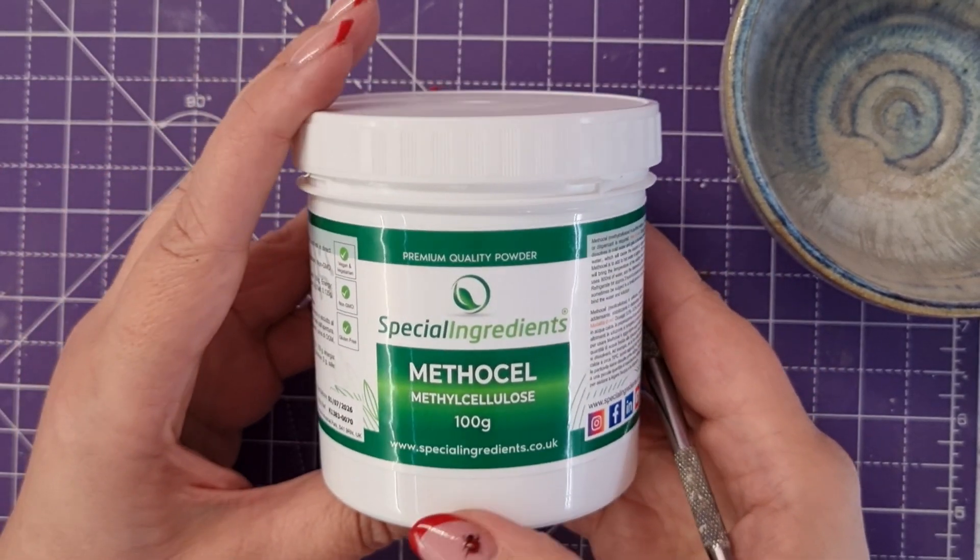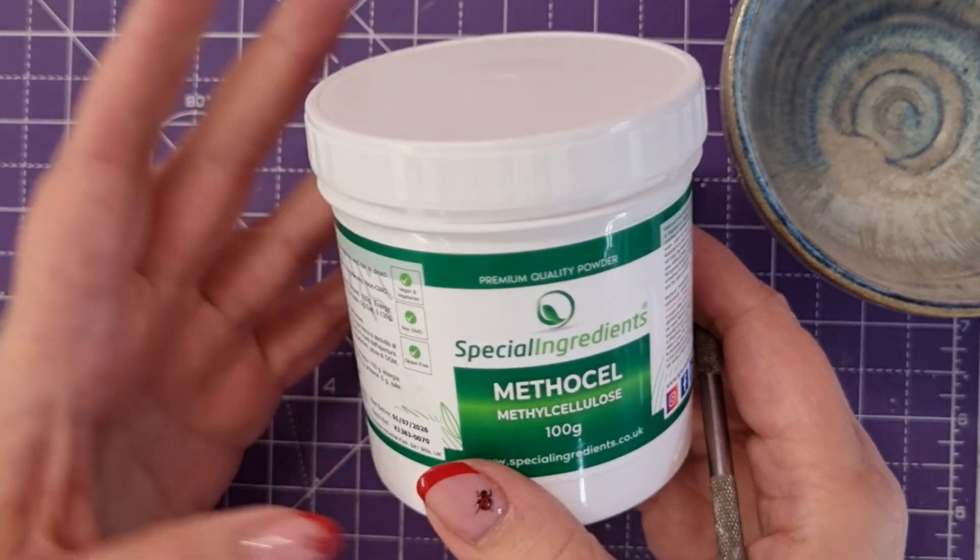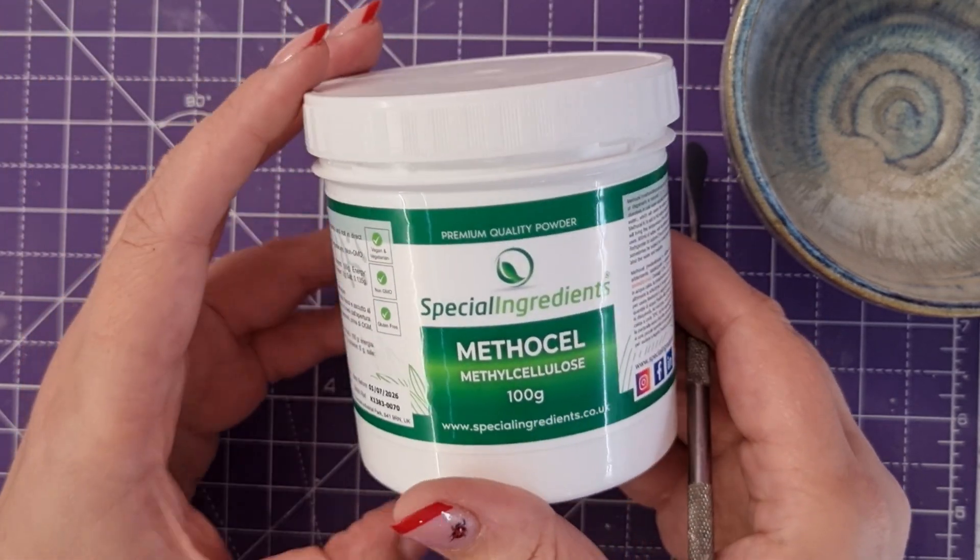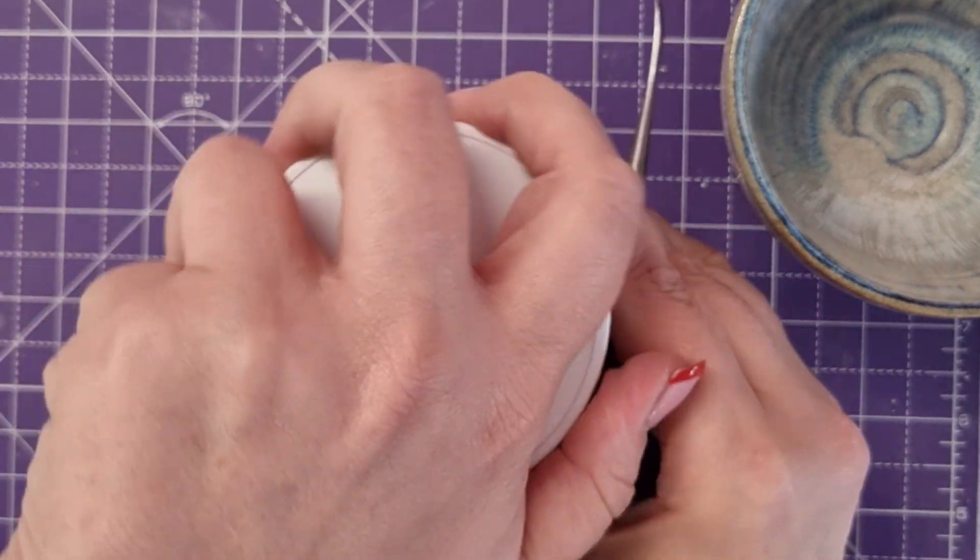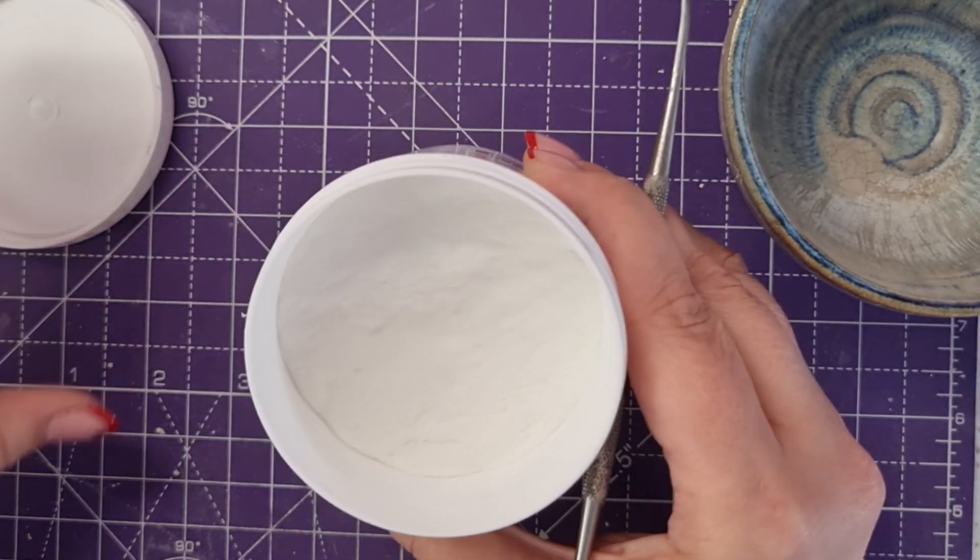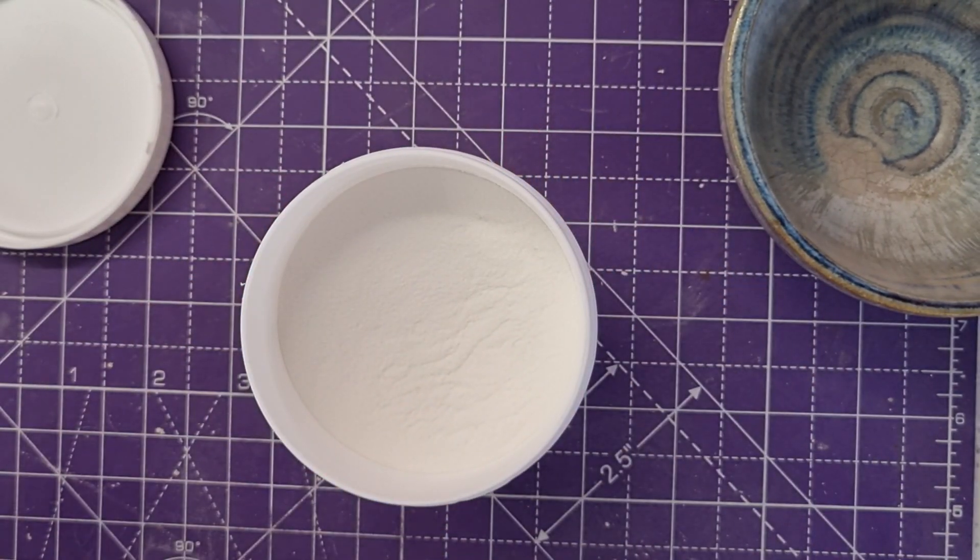I got this from Amazon and it was really quite inexpensive, less than ten pounds for this tub. There's lots in it, quite enough for this job. It looks like this - a fine powder. It doesn't smell of anything and this is food grade.